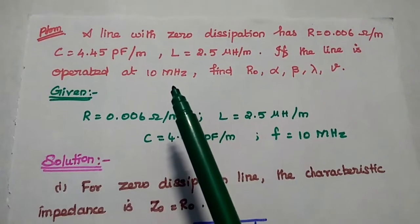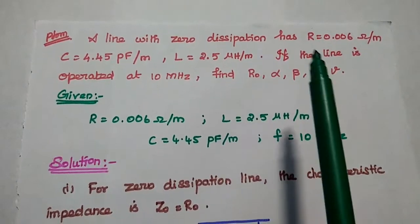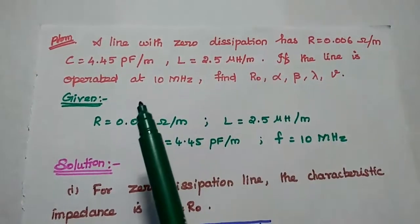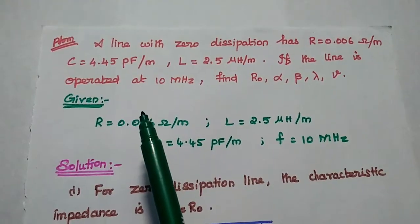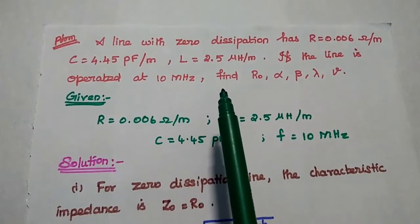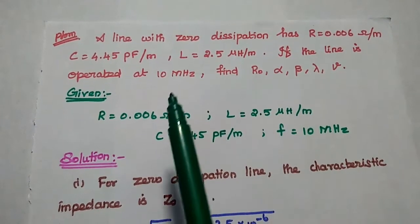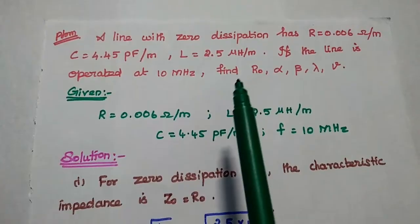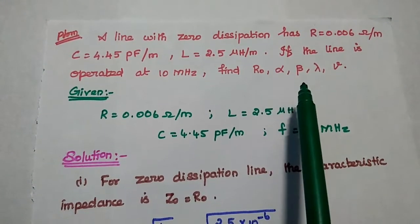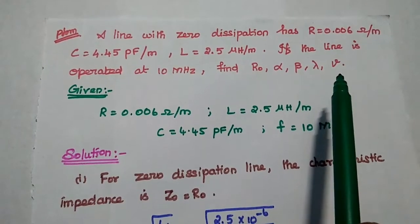The wavelength lambda is equal to 2 pi by beta. Here is the problem: a line with zero dissipation has R equal to 0.006 ohm per meter, C equal to 4.45 picofarad per meter, and L equal to 2.5 microhenry per meter. If the line is operated at 10 MHz, find the characteristic impedance, attenuation constant, propagation constant, lambda, and velocity of propagation.